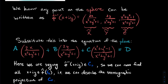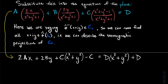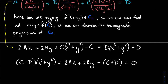Now we do some algebra. We clear the denominators by multiplying through by (x²+y²+1). After collecting terms, the x²+y² terms and constant terms group together, giving: (c−d)(x²+y²) + 2ax + 2by + (−c+d) = 0.